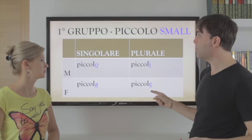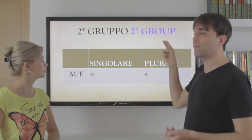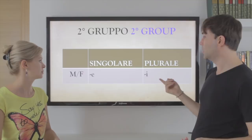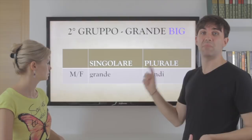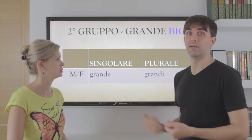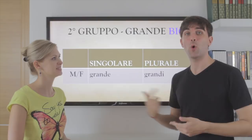Now, again, just like nouns, we have the other group — the second group — which doesn't have a difference between masculine and feminine. So the adjective ends in E and the plural ends in I. Example: 'big' — grande, grandi. Marina is grande. Io e Luca siamo grandi. Noi siamo grandi. Io e Marina siamo grandi.